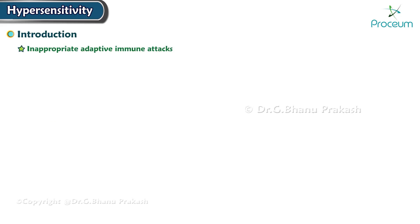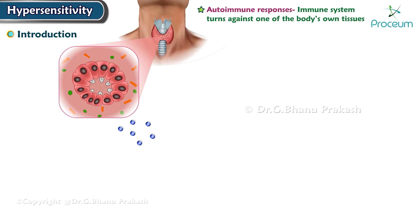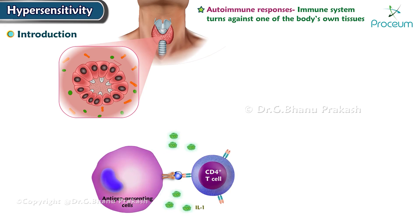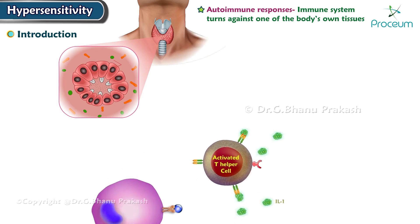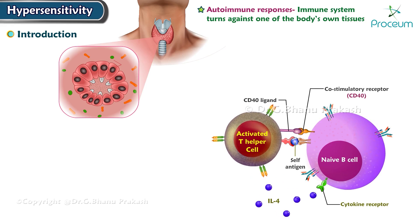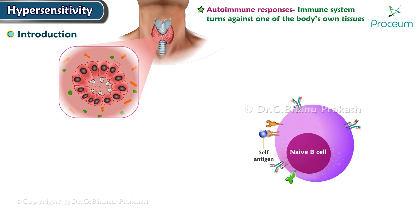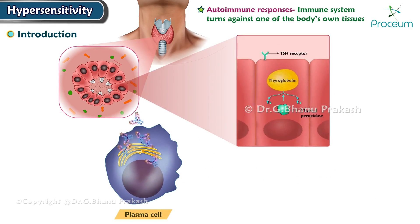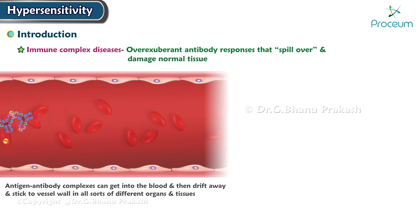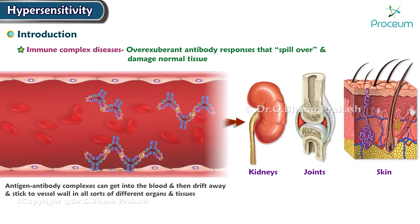Inappropriate adaptive immune attacks cause reactions harmful to the body. These include autoimmune responses, in which the immune system turns against one of the body's own tissues, immune complex diseases, which involve overexuberant antibody responses that spill over and damage normal tissue, and allergies.